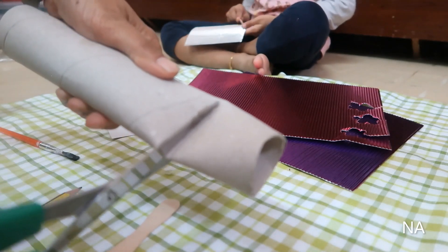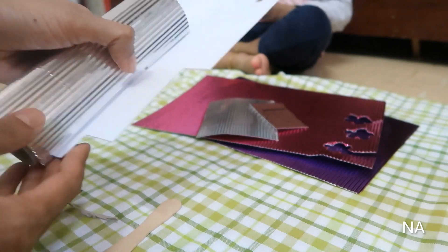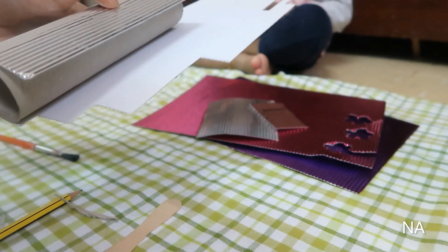Next, heading on to the making of the orbiter. For that I have taken a tissue roll. We don't want this length so we will be just cutting out the excess.